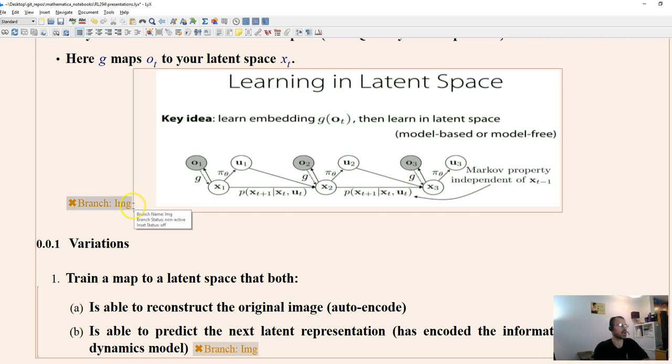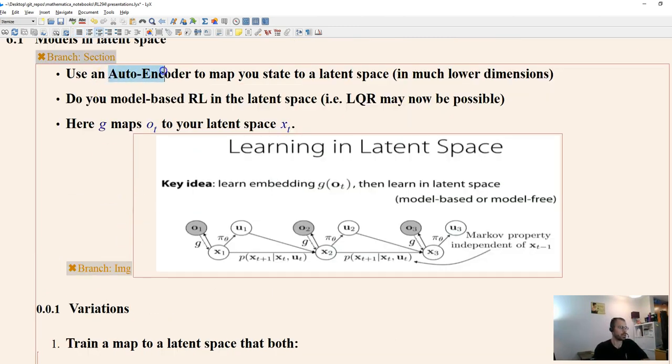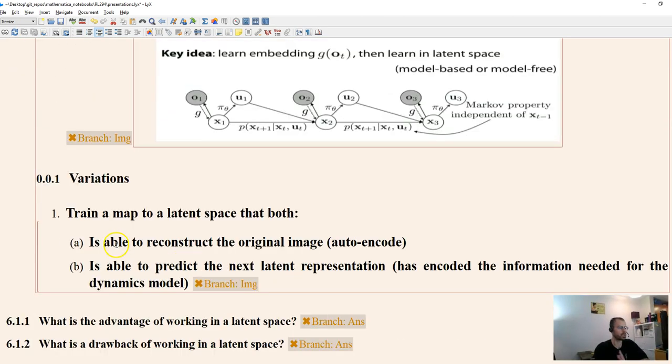So there's some variations of this. You can just use an autoencoder or you can jointly train something that will map to a latent space so that you're able to reconstruct the original image, but you're also able to predict the next latent representation accurately. So you can jointly train those. And it seems like it should work better to train a representation that allows you to do your forward model well and also captures the information. Why not train something to do both at once? It's basically end-to-end training tends to work better.